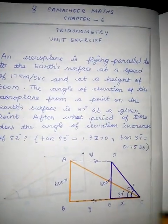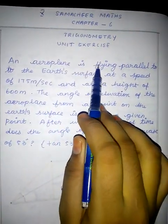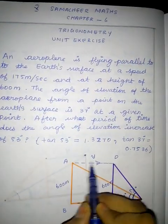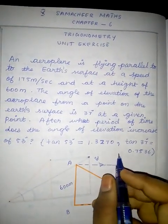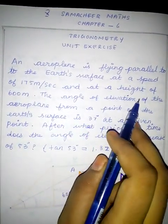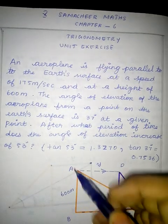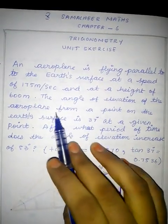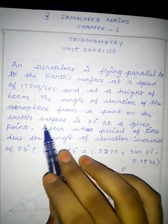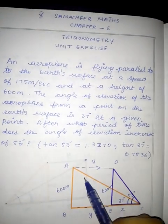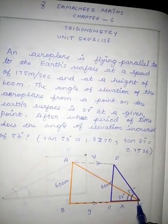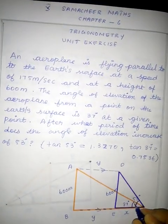We are going to show you a diagram of an aeroplane flying parallel to the earth's surface at a speed of 175 meters per second and at a height of 600 meters. The angle of elevation of the aeroplane from a point on the earth's surface is 37 degrees.